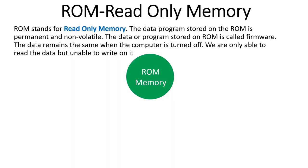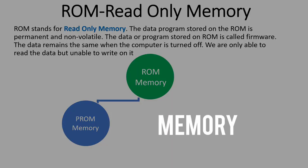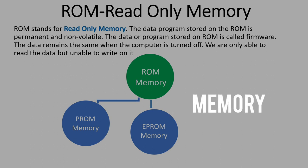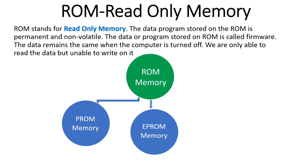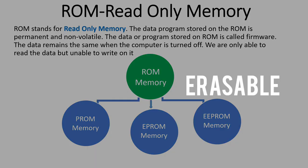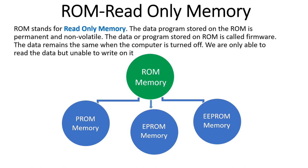ROM is of three types. First is PROM, Programmable Read-Only Memory, which can be programmed only once and cannot be reprogrammed. Next is EPROM, Erasable Programmable Read-Only Memory, which can be programmed more than once — the previous program can be erased using ultraviolet rays and reprogrammed with new code. Third is EEPROM, Electrically Erasable Programmable Read-Only Memory, which can also be programmed many times and data can be erased using electrical charge or electrical signals.